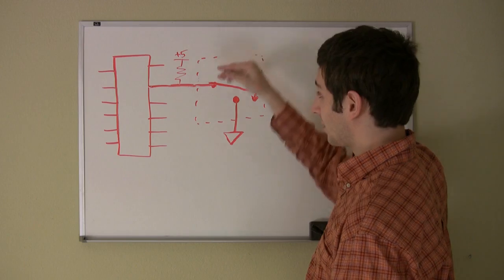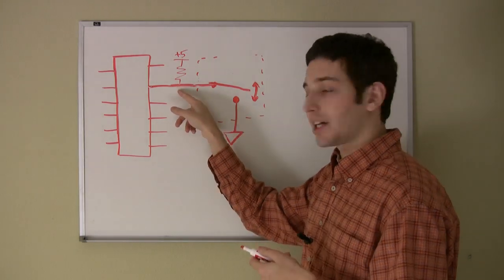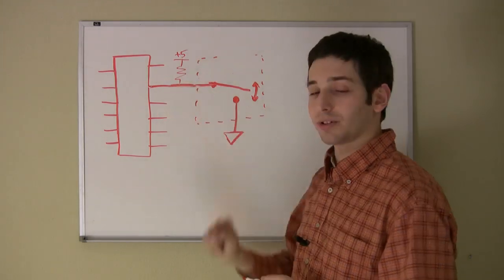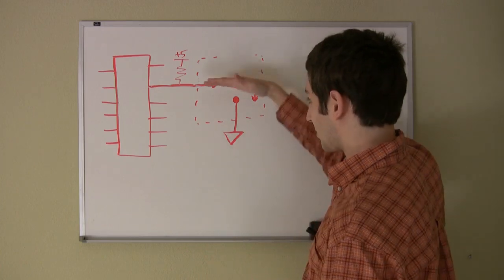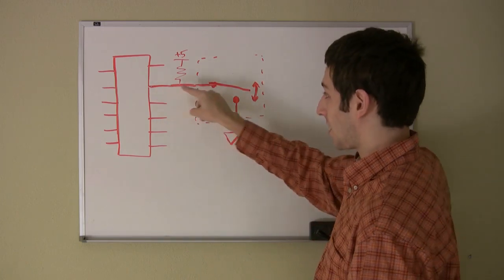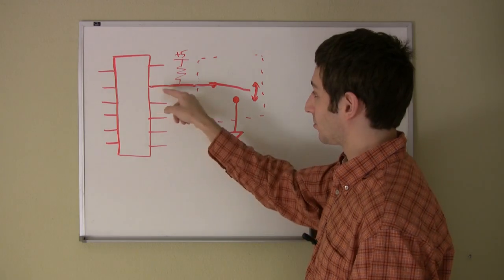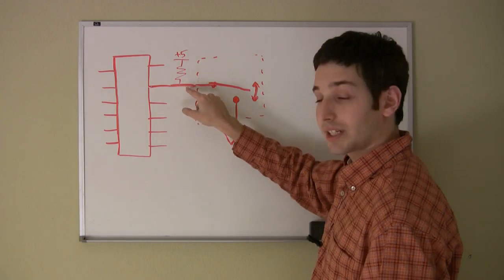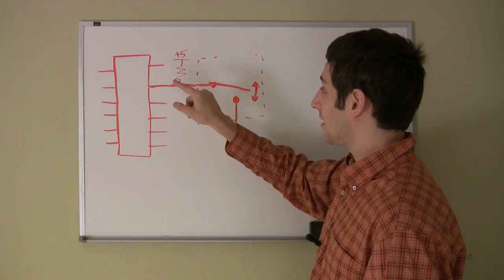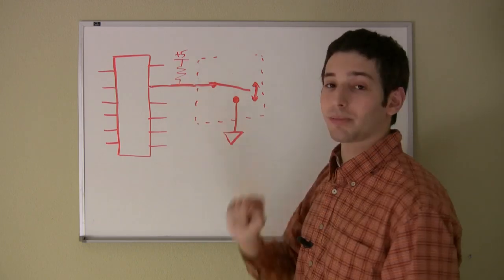Now, when the switch is open, the voltage at this node is kept high by the pull-up resistor, and the microcontroller reads a 1. When the switch is closed, the resistance of the path through the switch is much less than the resistance through the pull-up resistor, so the voltage here becomes close to the ground, and this is read as a 0 by the microcontroller.